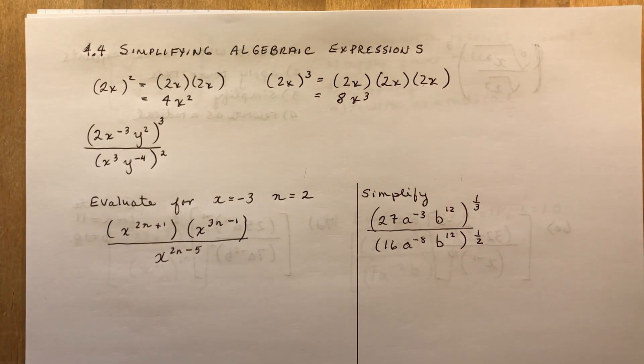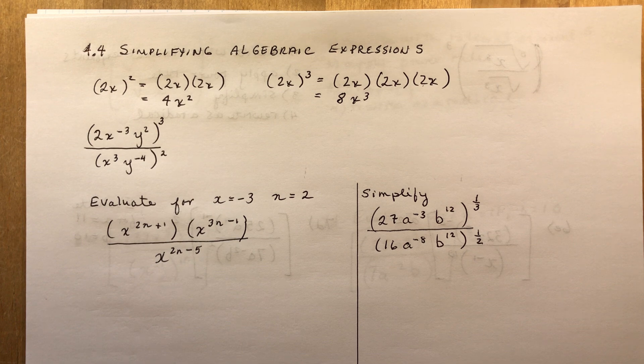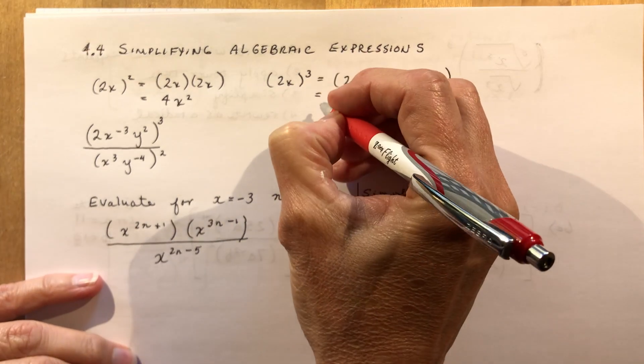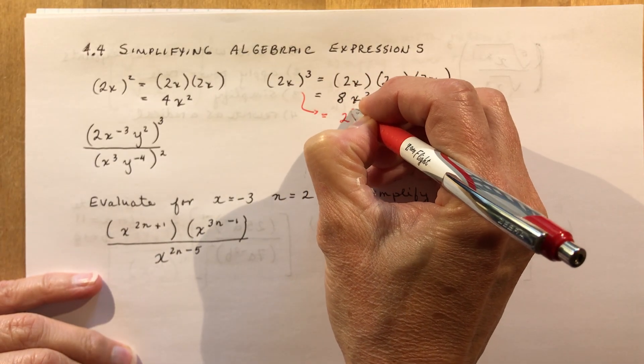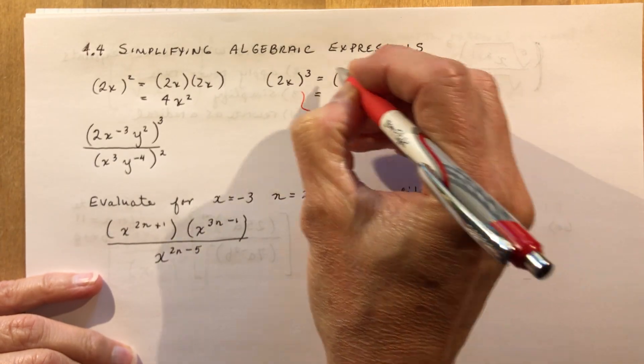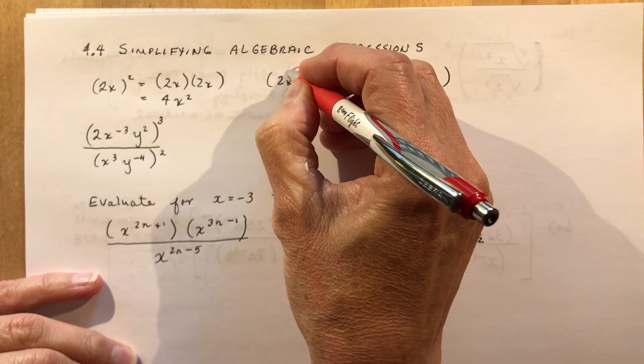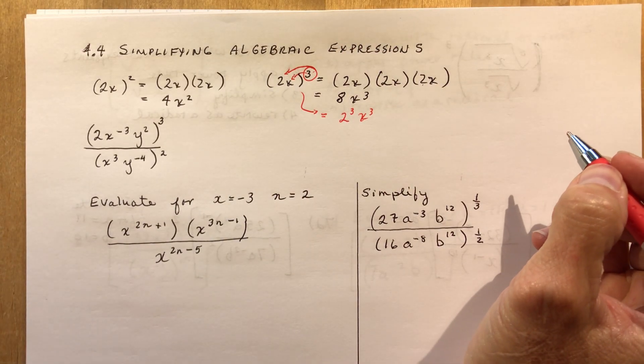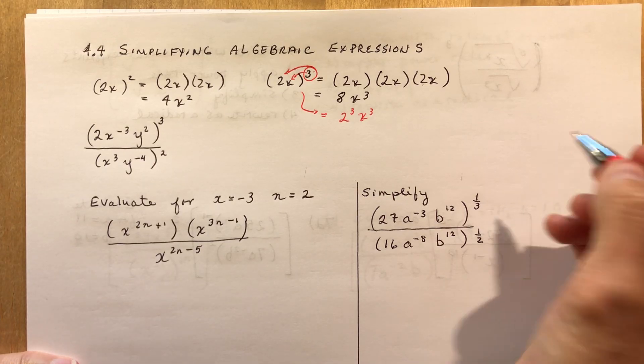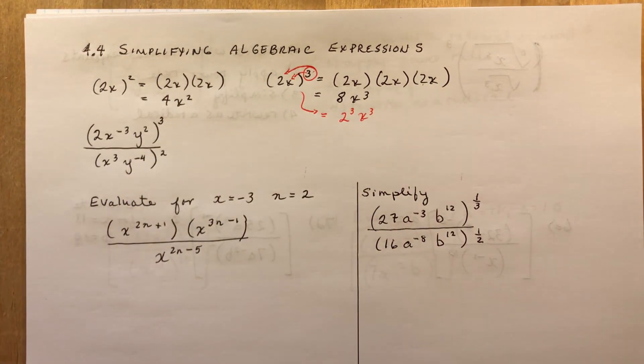So what I want you to see in this exercise is that this evaluation is really just the following. So I do 2 cubed and x cubed. So this cube here applies to each of the terms in the brackets. And that is key to doing this assignment.